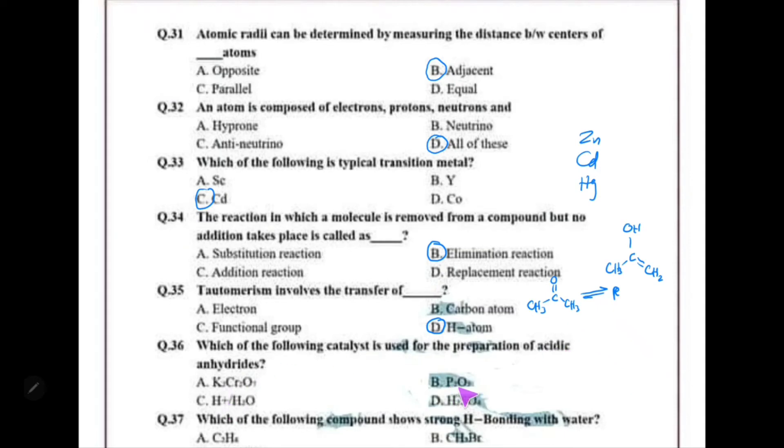Which catalyst is used for the preparation of acid anhydrides? P₂O₅ is most commonly used for making anhydrides. That is choice B.